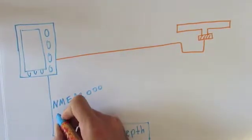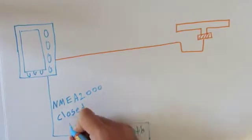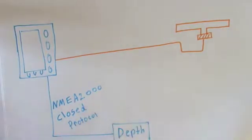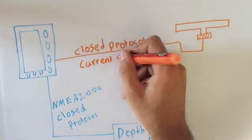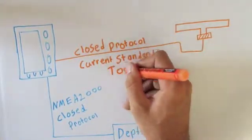As can be seen, manufacturer B has produced a multifunctional display as well as a depth transducer. These are able to communicate well over the proprietary closed protocol running above NMEA 2000.